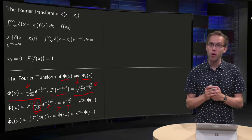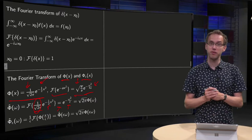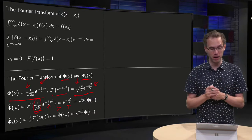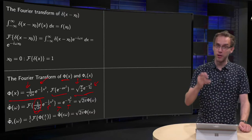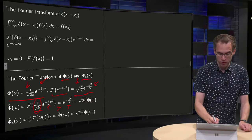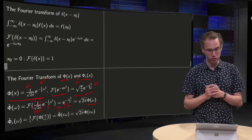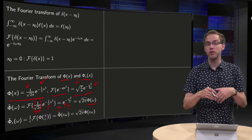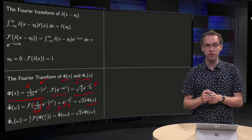The Fourier transform of phi becomes e to the power of minus omega squared over 2, which is almost the same as our original phi of x. If we plug in x equals omega in phi of x, we get phi of omega equals e to the power of minus one half omega squared divided by square root of two pi. So phi-hat of omega equals, apart from a factor of square root of two pi, our phi of omega.